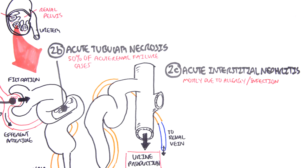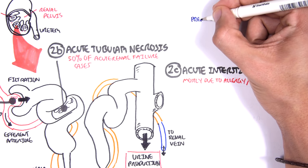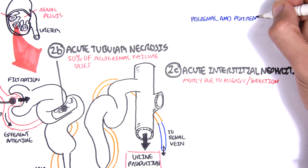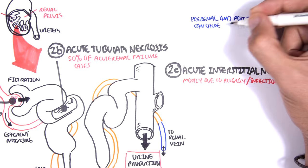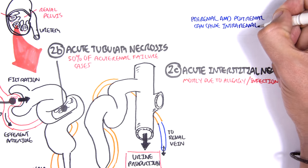Now, before we look at the fourth type of intra-renal cause of acute renal failure, we have to understand that pre-renal, intra-renal and post-renal causes are all connected. For example, a pre-renal and post-renal can cause an intra-renal problem.